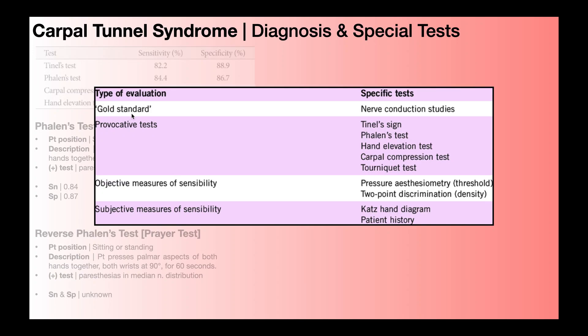The gold standard for diagnosing carpal tunnel syndrome is a nerve conduction study. The basic idea is that there's a normal range for the velocity of nerve conduction at different points along the upper extremity, including across the carpal tunnel. They measure the velocity of conduction across the carpal tunnel, and if it's lower by a certain amount, they can diagnose the person with carpal tunnel syndrome. Unless you're trained in nerve conduction studies, we have to rely on several special tests — most of which are provocative tests — and that's what we're going to cover now.